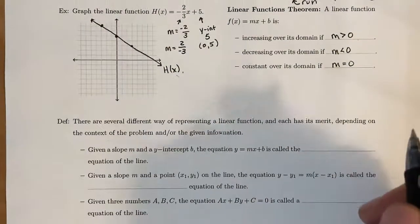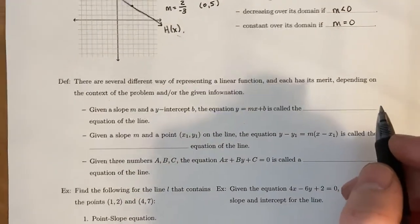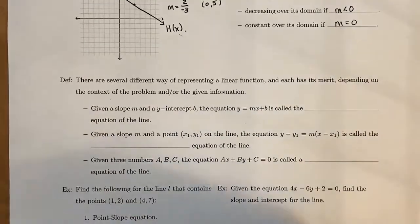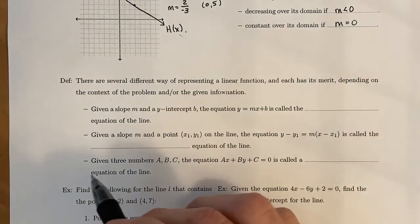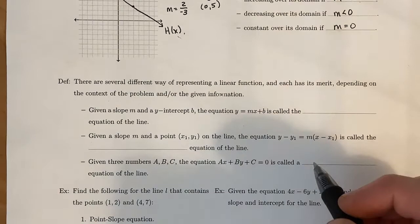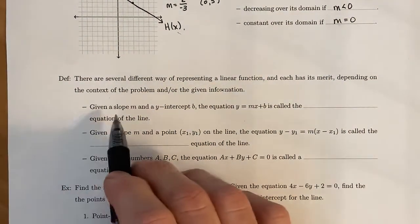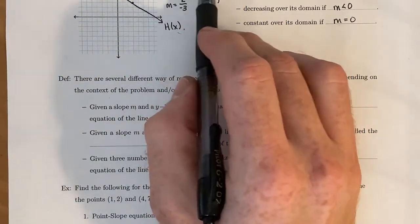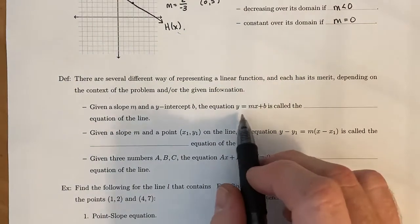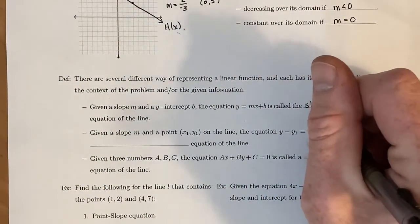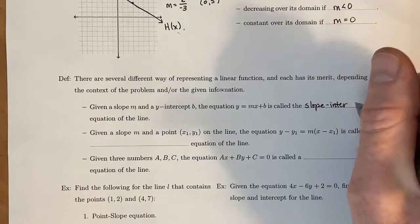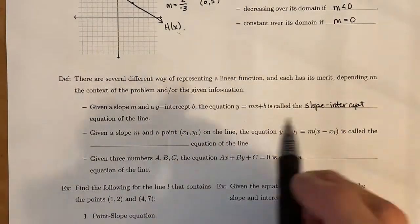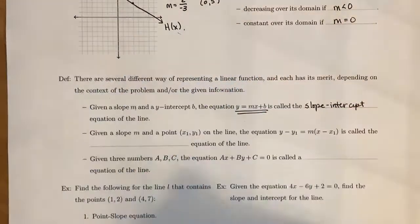There is a couple different ways in which we can represent a linear function. And each way of representing it has its own merit. It also comes down to what the problem is asking, or what is given in the problem as information. So the first way is if you're given a slope m and a y-intercept b. Then this equation y equals mx plus b is called the slope intercept equation of the line. And that's the one that you're most likely familiar with right here.